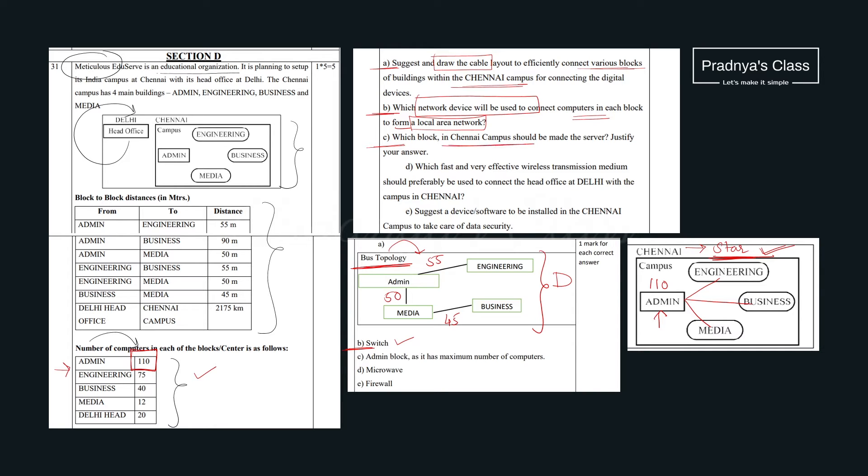In which block in Chennai campus should be made server? Justify your answer. Look at the Chennai campus. Admin has 110 computers. So it will act as a server. That's why the answer is admin block. And to justify answer we have written that it has a maximum number of computers. Let's check the next question. Which is fast and efficient wireless transmission medium should be used to connect head office at Delhi with Chennai? For the given distance, microwave will be the efficient option. Moving ahead to the last question.